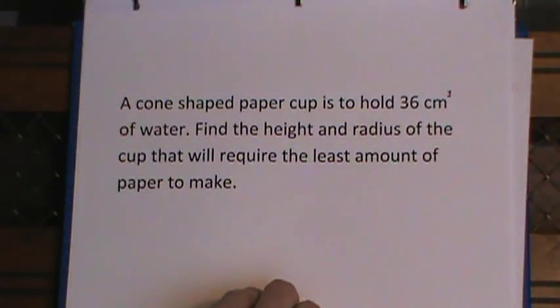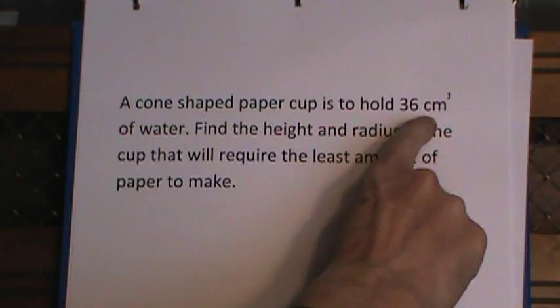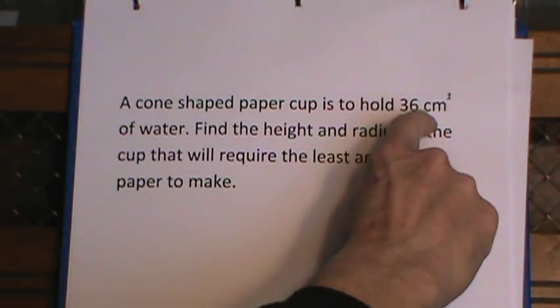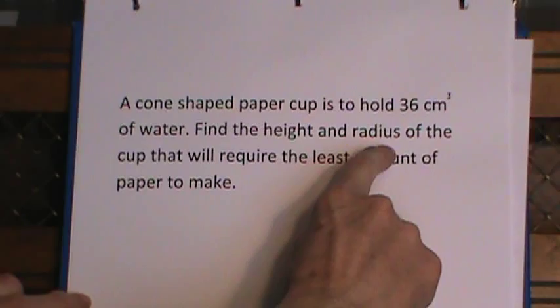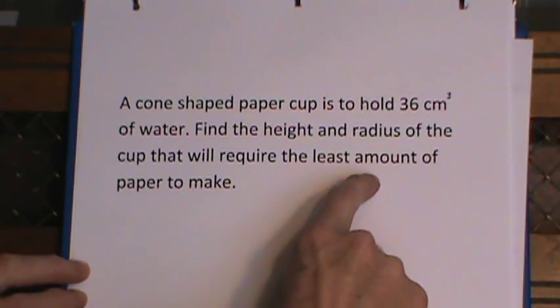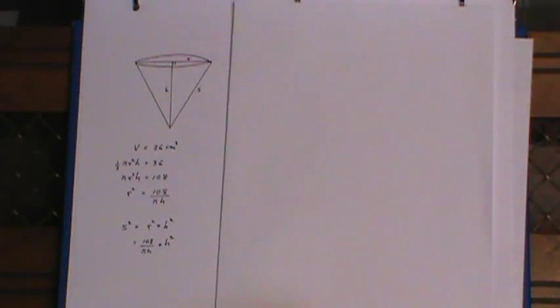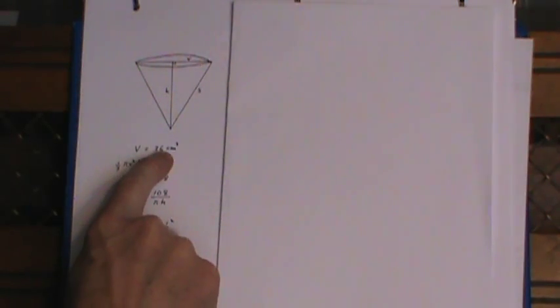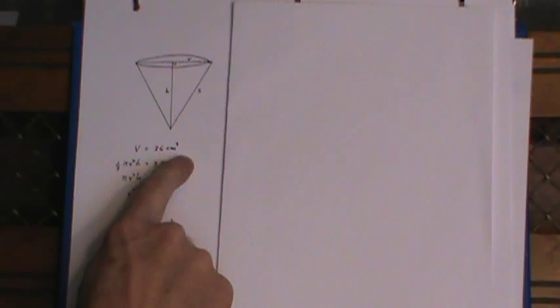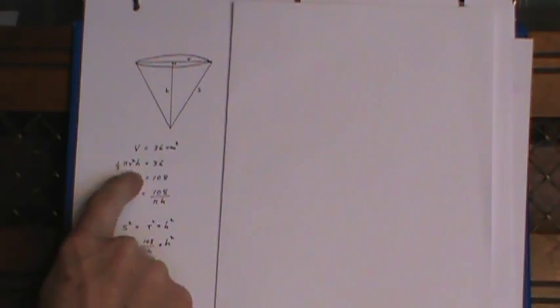Now the second problem again it's a cone shaped paper cup. I've given a volume fixed, the volume, and we want to find the height and radius of the cup that require the least amount of paper to make. In the height of the cone. So here's my constraint, the volume 36 cubic centimeters and the formula for volume one-third area of the base times the height.